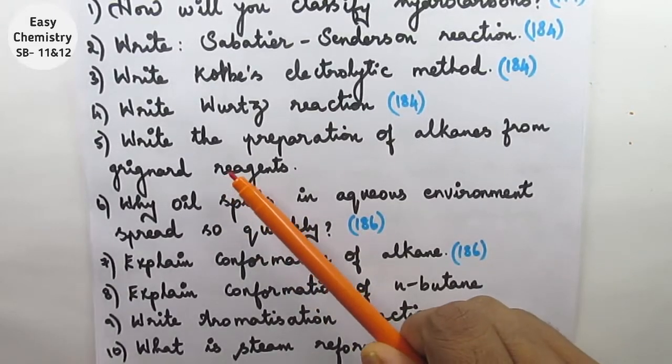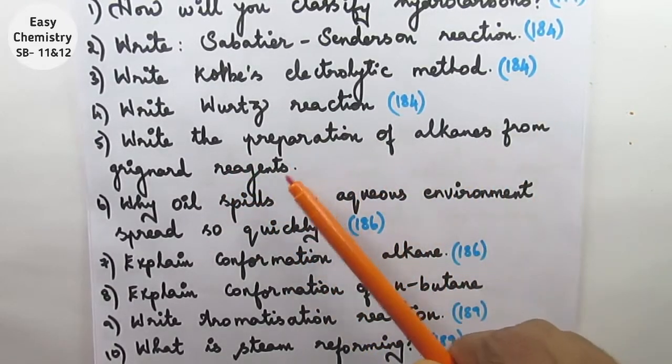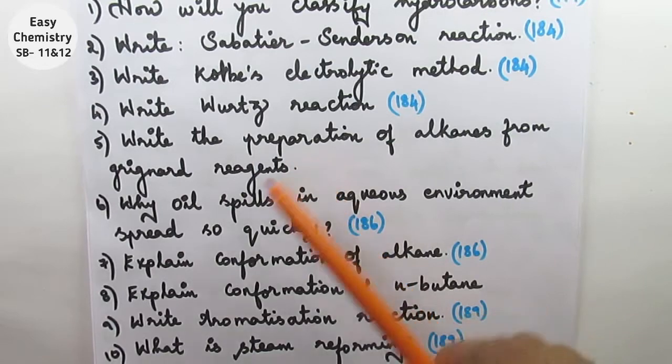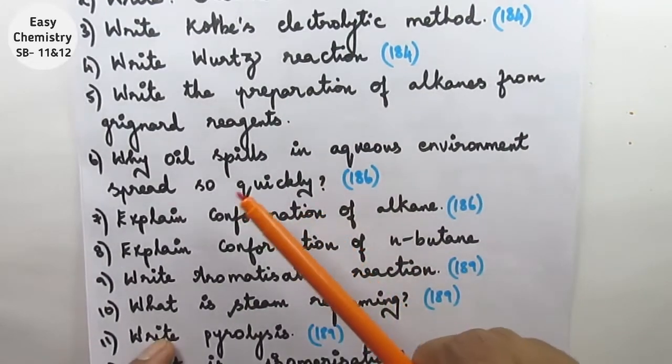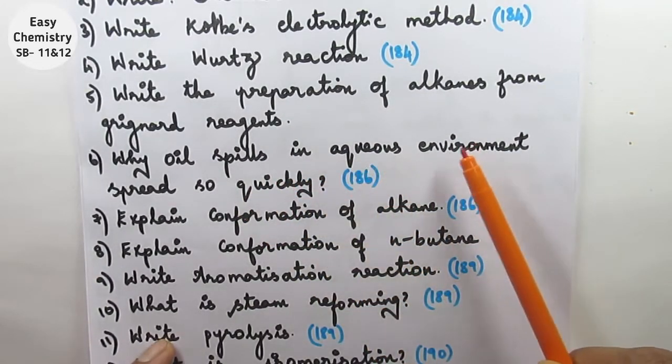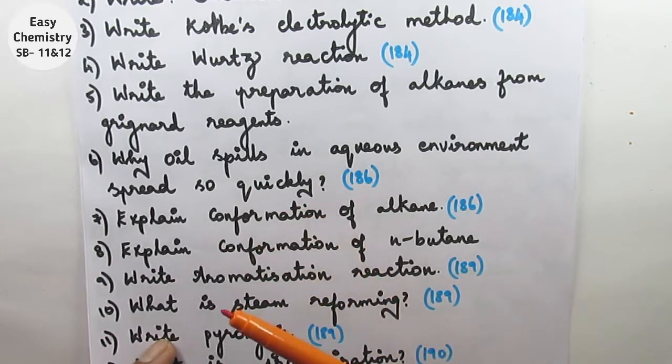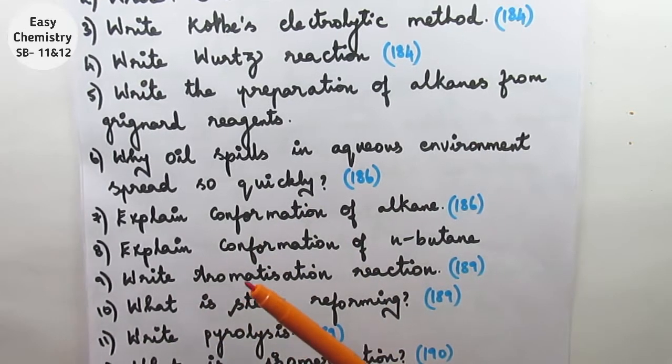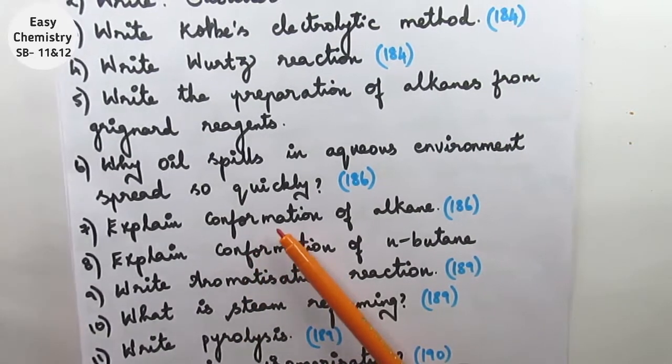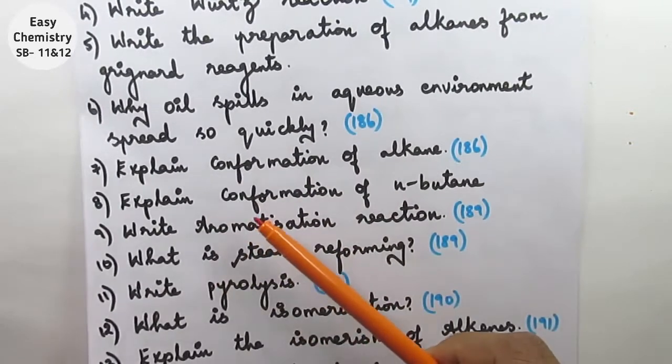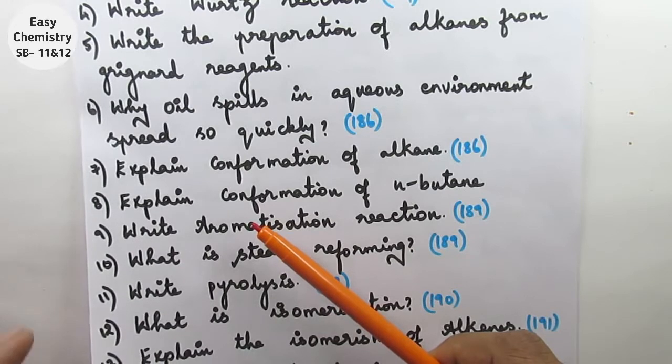Question number 5: Write the preparation of alkanes from Grignard reagents. It is also important. Question number 6: Why oil spills in aqueous environment spread so quickly? Question number 7: Explain conformation of alkanes. Question number 8: Explain conformation of n-butane.